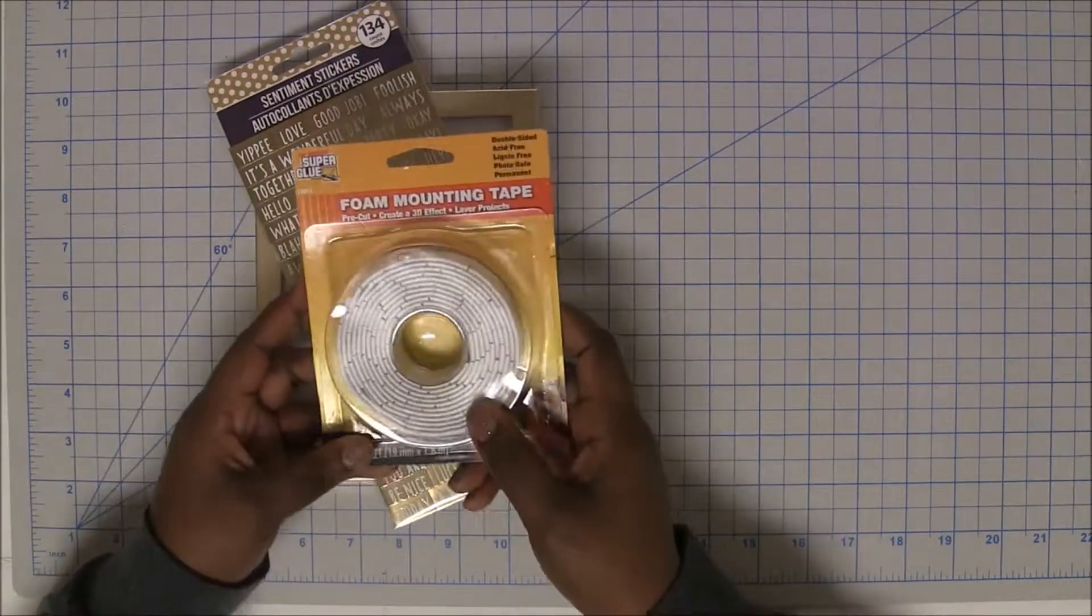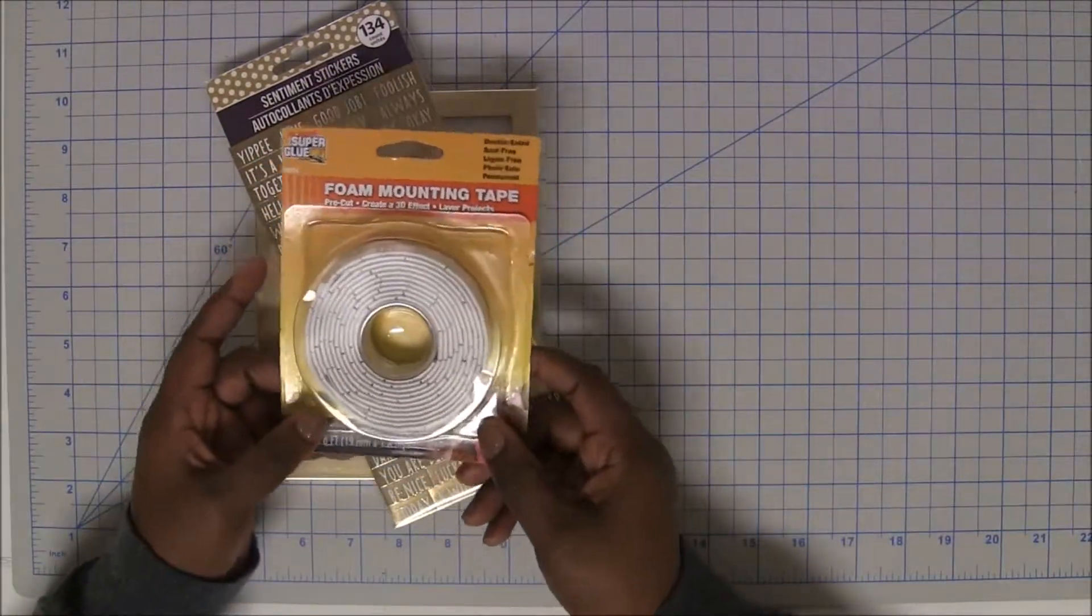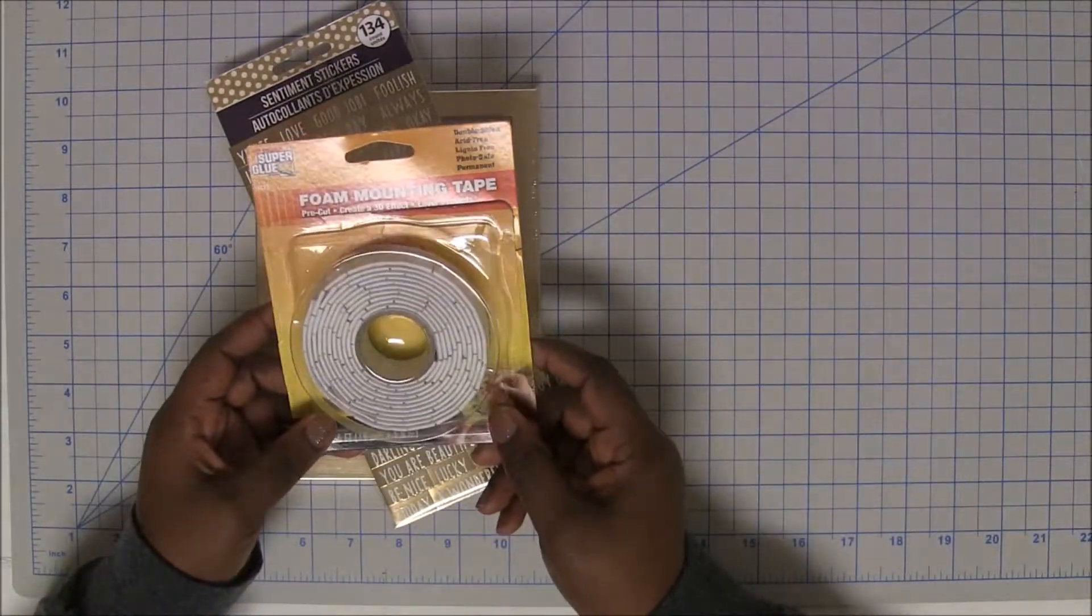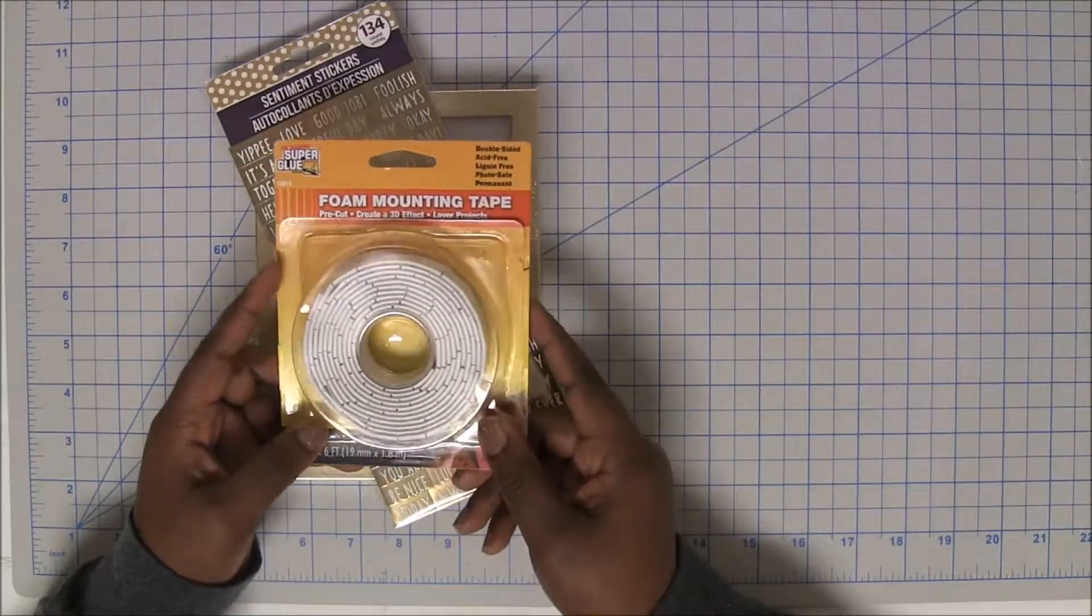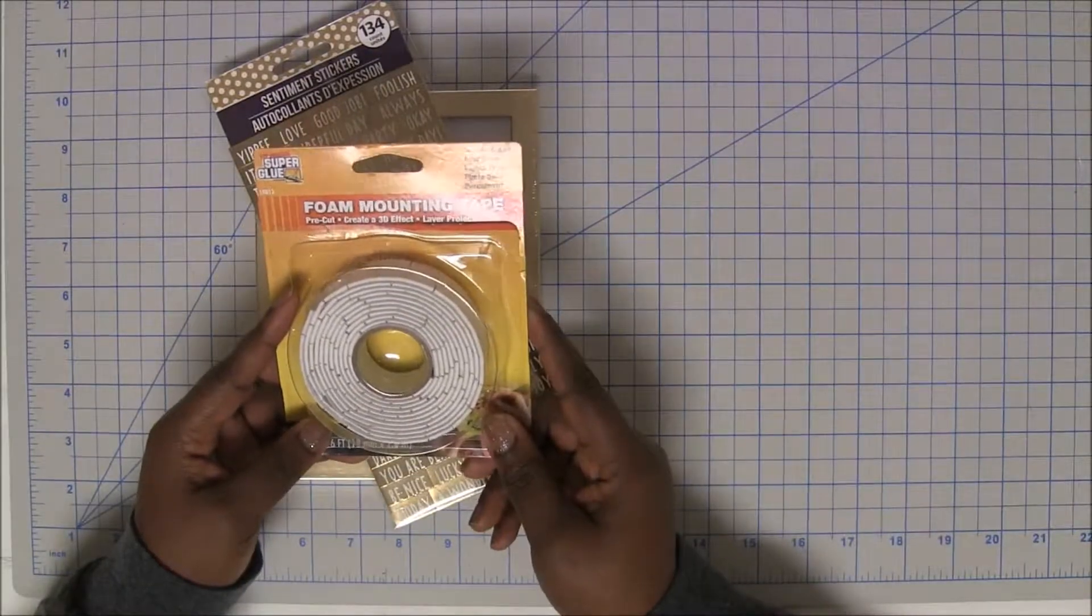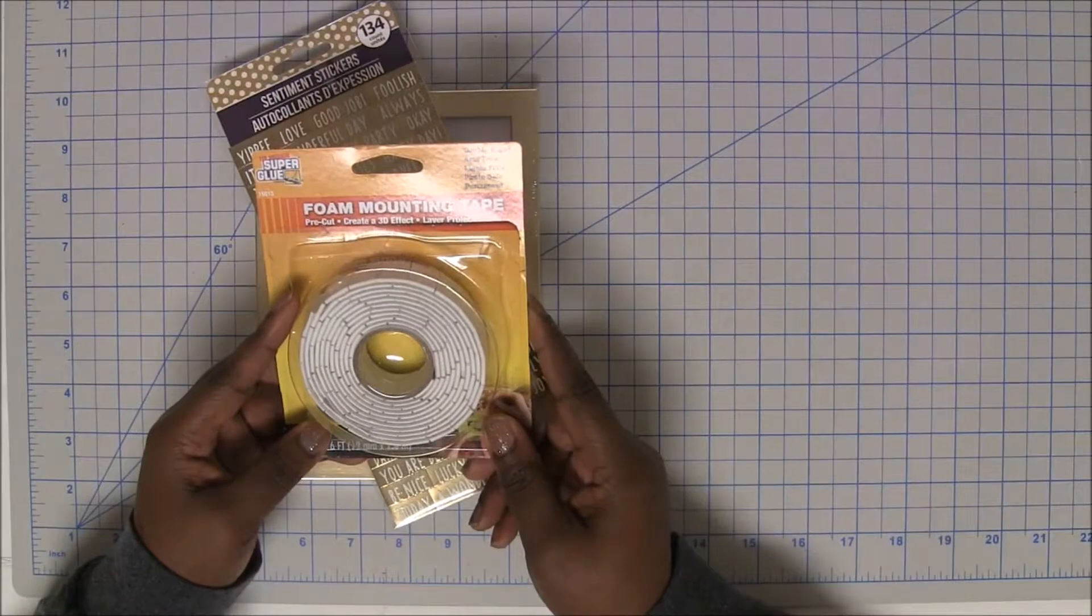The other thing that I'm using from the Dollar Tree is foam mounting tape. This is in the section that has all of the glue and the paint brushes and the tools and stuff. This stuff is awesome, it's made by Super Glue and it's really good for craft projects.